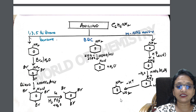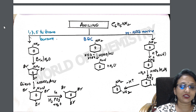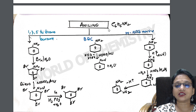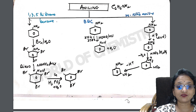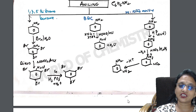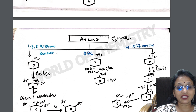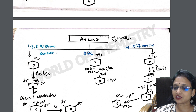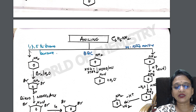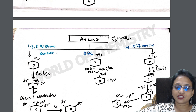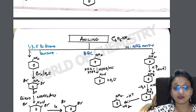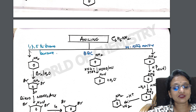Aniline conversions: aniline to 1,3,5-tribromoaniline, aniline to BDC, and aniline to metanitroaniline — all taken in one page. Tomorrow I will come back with more aniline conversions. This video covers complete aldehydes and part of amines. Please take a notebook, note everything, and practice. Tomorrow's video will cover more aniline conversions and something special. Thank you for watching.